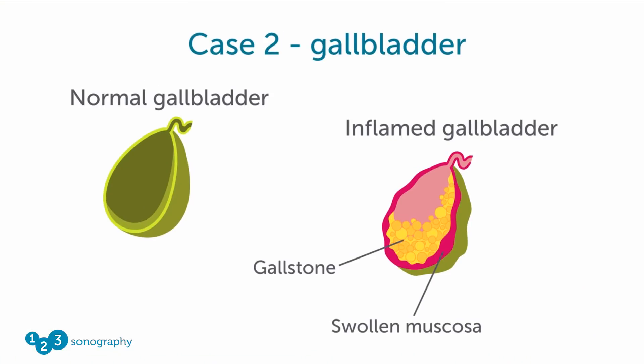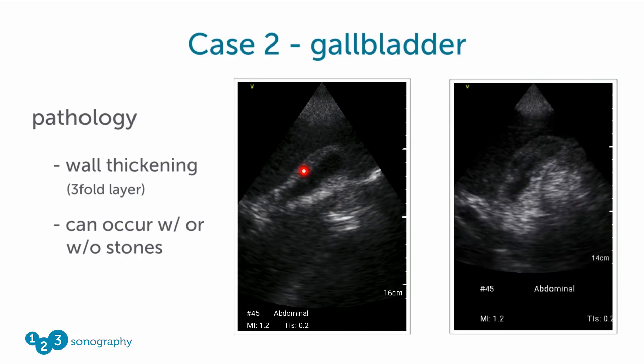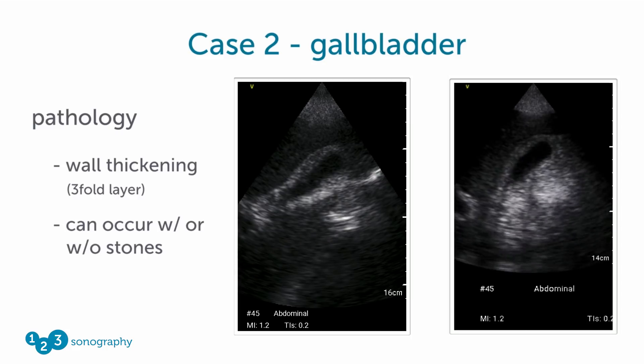The next case can happen with or without stones. As you saw in the images before, the gallbladder wall was still thin with no sign of inflammation. But when stones are inside the gallbladder, a severe inflammation of the gallbladder can occur. This is visualized by a thickening of the normally very thin wall of the gallbladder. When it is a very acute onset, the thickening has a typical three-fold layer: an echo-rich, echo-poor, and echo-rich layer, which is a sign of severe inflammation. This situation mostly occurs with stones in the gallbladder, but it can also, though rarely, occur without stones.